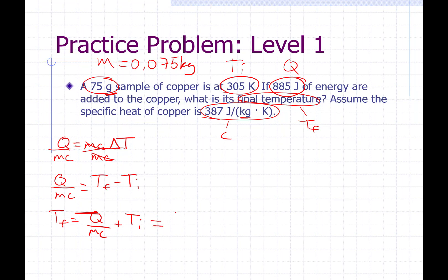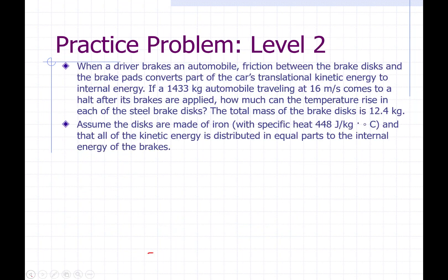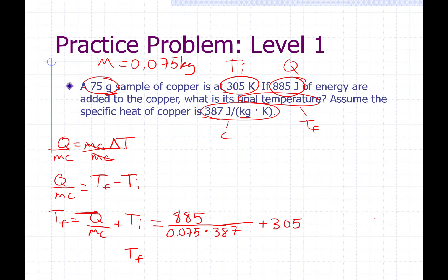And I just plug in my numbers. Q is 885 joules divided by M, 0.075 kilograms, and our C is 387 joules per kilogram Kelvin. Add that to the initial temperature, 305 Kelvins. Plugging into a calculator — make sure 387 is also in the denominator — the final temperature is 335 Kelvins.